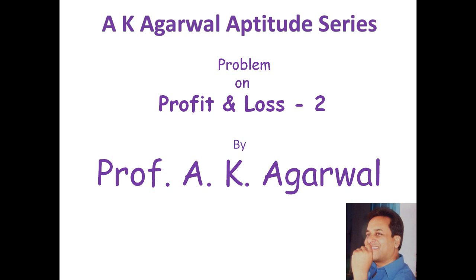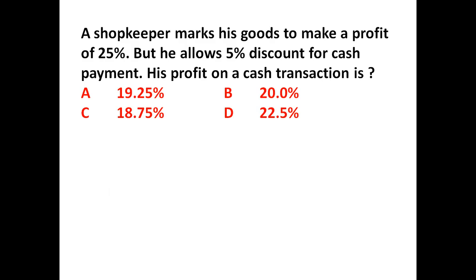Hello friends and welcome to AK Agarwal aptitude series. In this session we are going to learn a problem on profit and loss. The given problem is: a shopkeeper marks his goods to make a profit of 25%, but he allows 5% discount for cash payment. Initially he is having 25% profit but he allows 5% discount, so what will be his profit on a cash transaction?